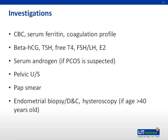As DUB is a diagnosis of exclusion, the following investigations need to be performed to find potential causes: CBC, serum ferritin, coagulation profile, beta-HCG, TSH, free T4, FSH, LH, E2, serum androgen if PCOS is suspected, pelvic ultrasound, pap smear, endometrial biopsy and D&C, and hysteroscopy if the patient is greater than 40 years old.